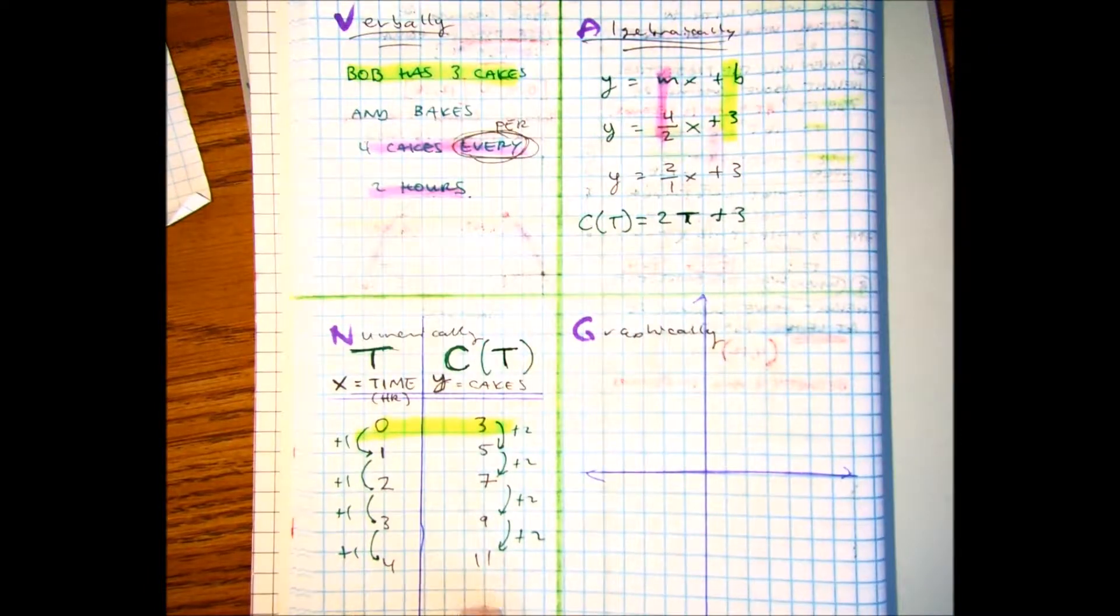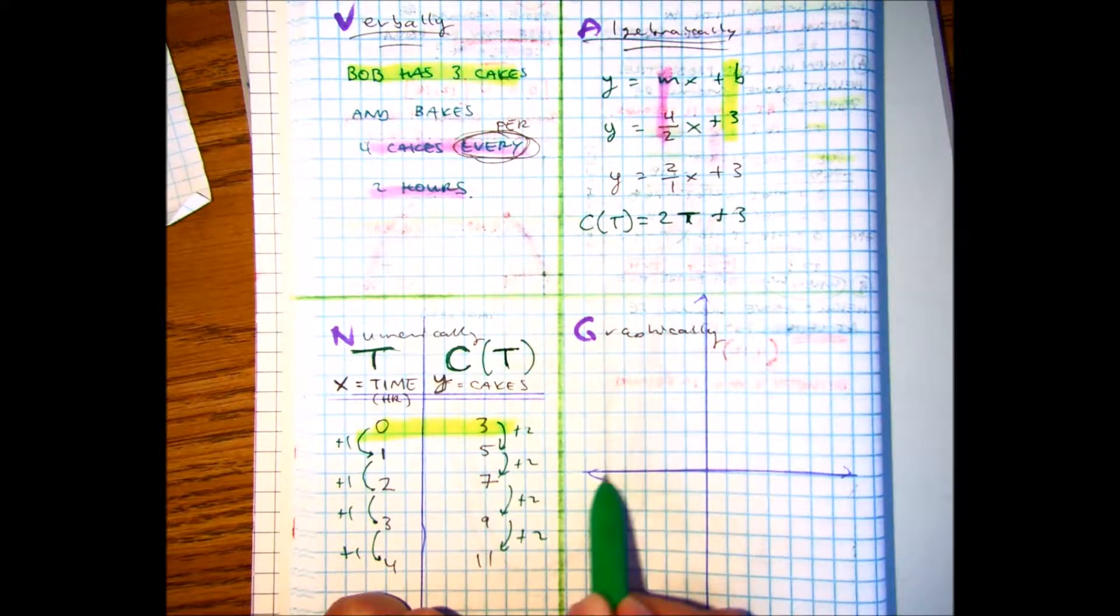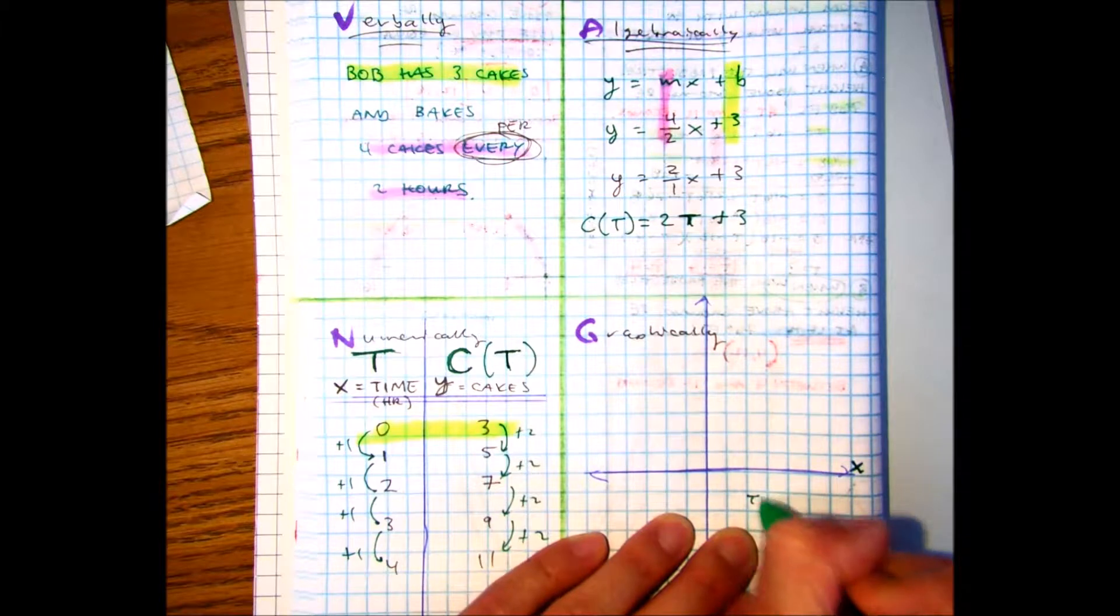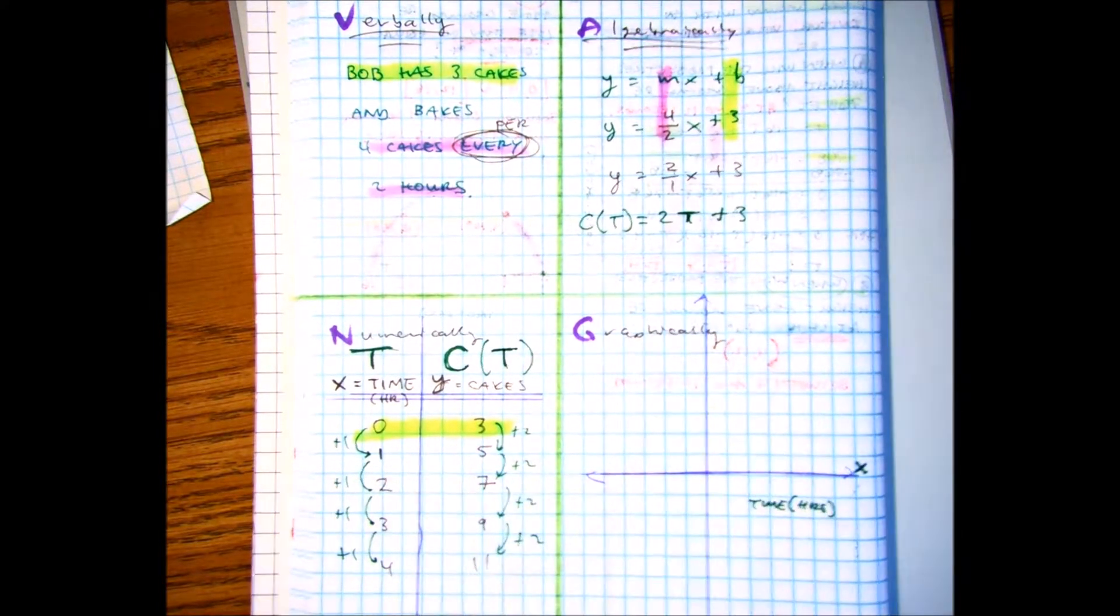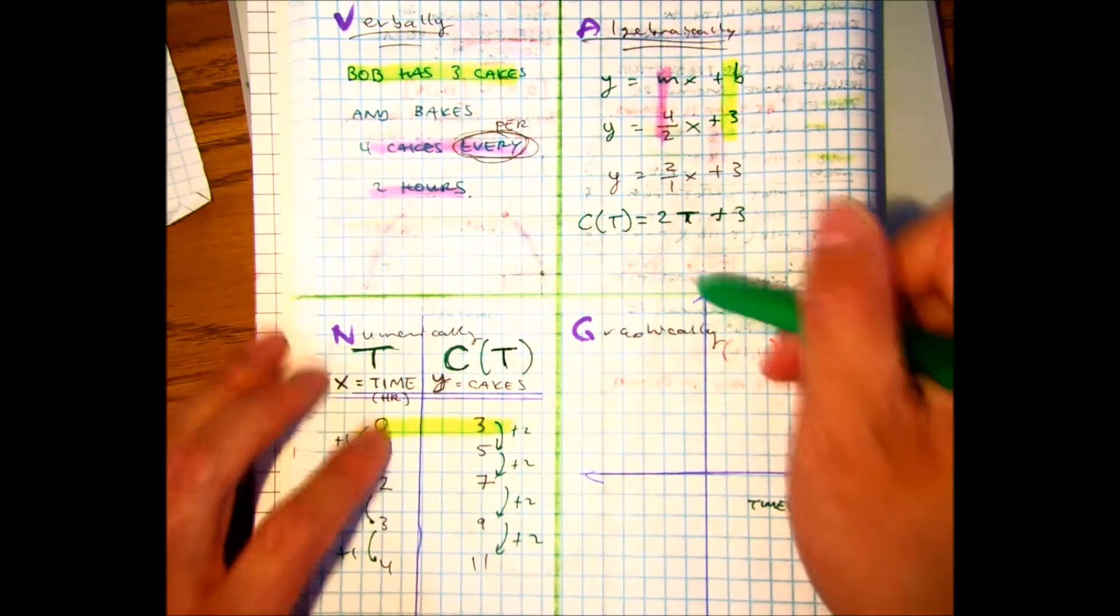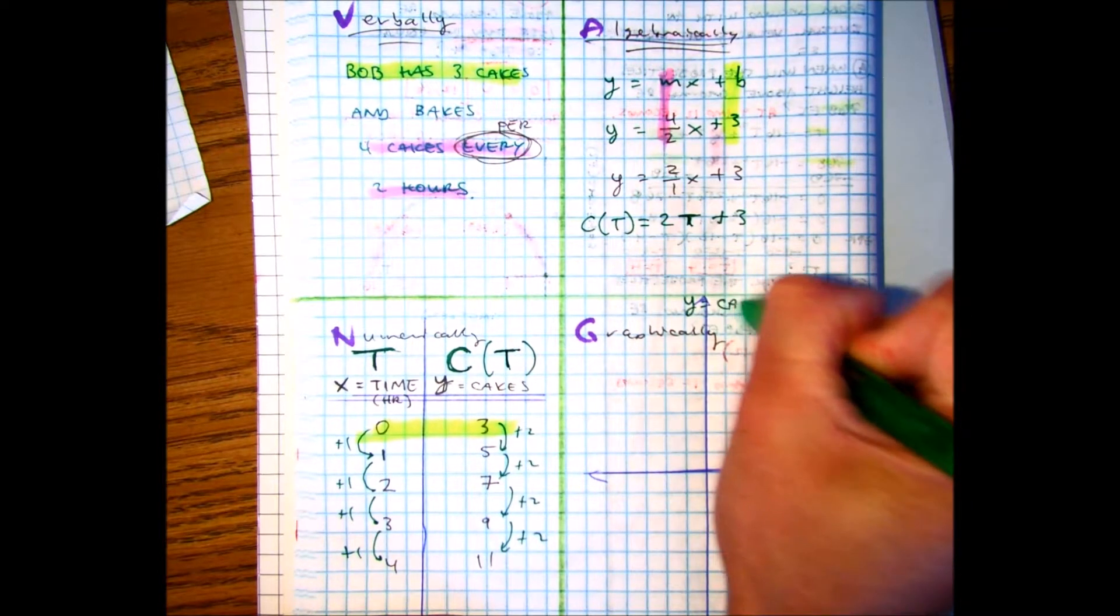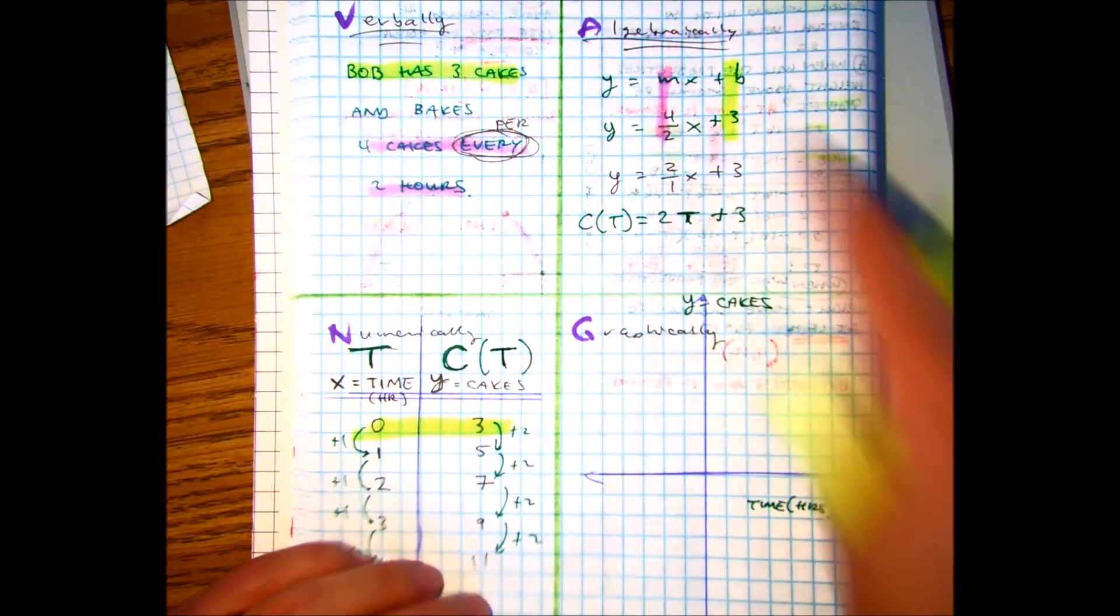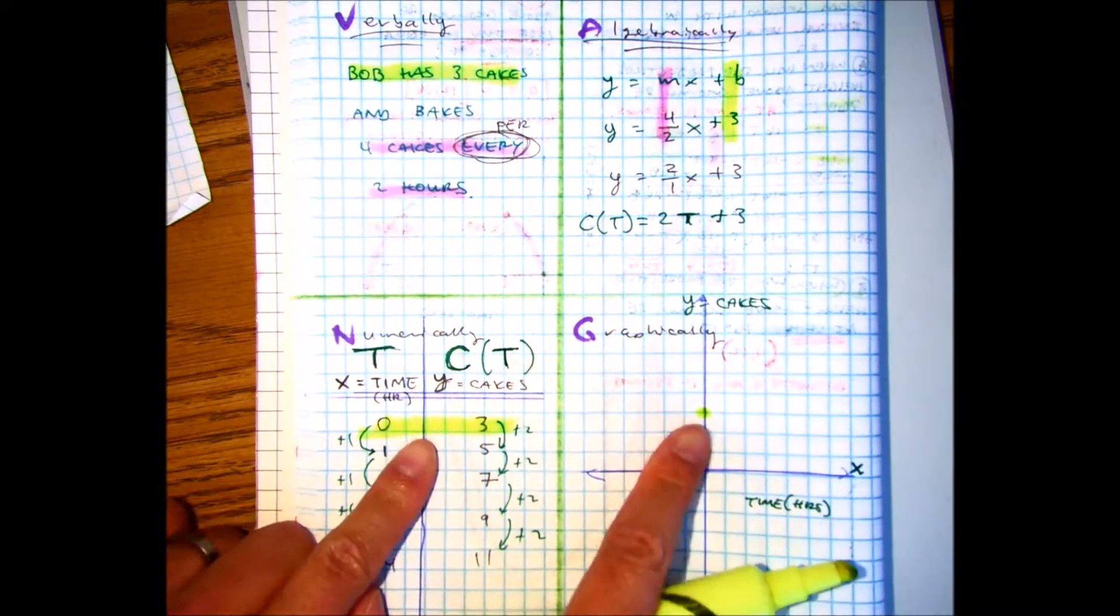Alright. Let's graph it now. Class, which axis is this? X. What does the x represent? Time measured in hours. And this is the y-axis, which represents my starting point of three. My y-intercept, zero, three.